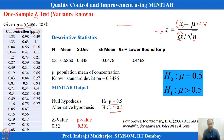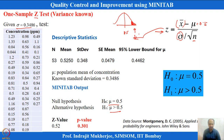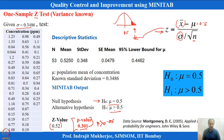We defined a rejection zone based on a one-sided test. Since our Z value of approximately 0.52 falls outside the rejection zone, and the corresponding P-value is 0.301 — which is greater than 0.05 — we cannot reject the null hypothesis. We do not have enough evidence to conclude that mu is greater than 0.5.